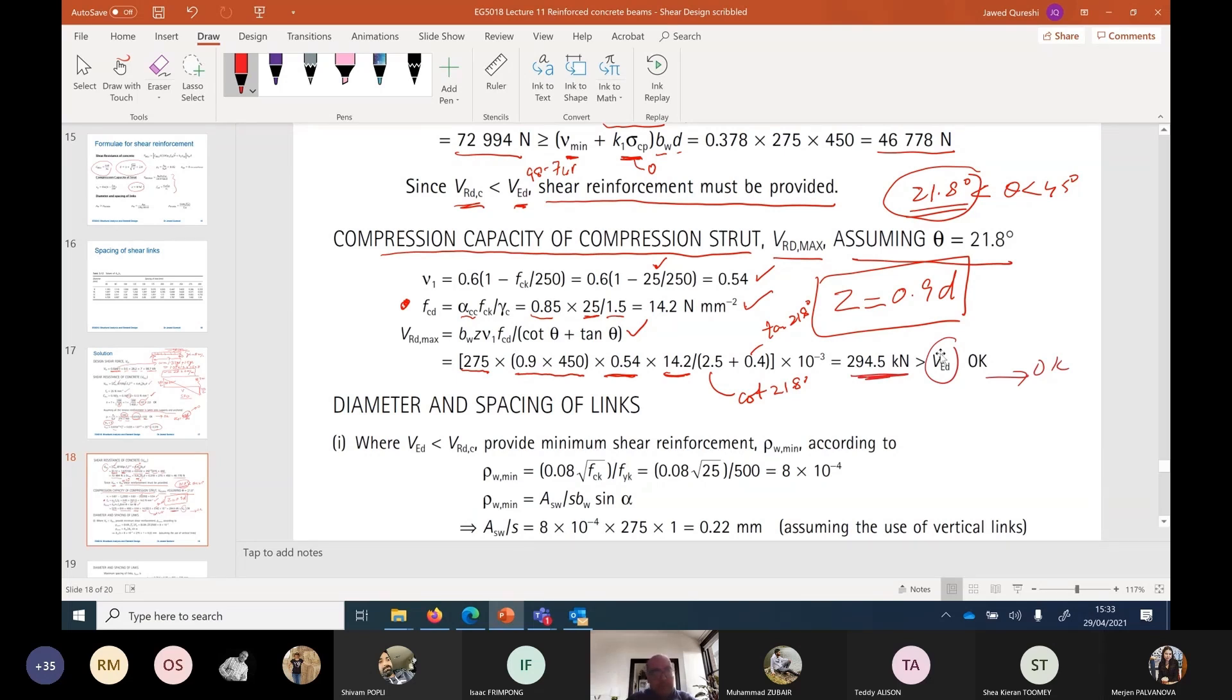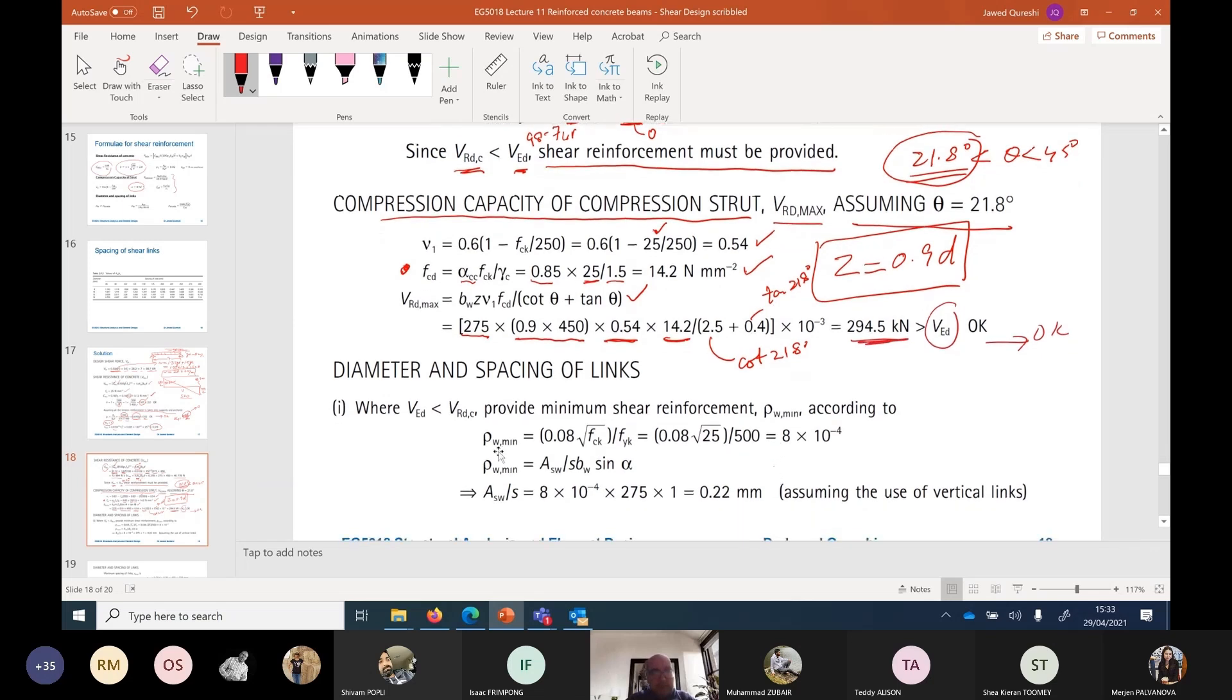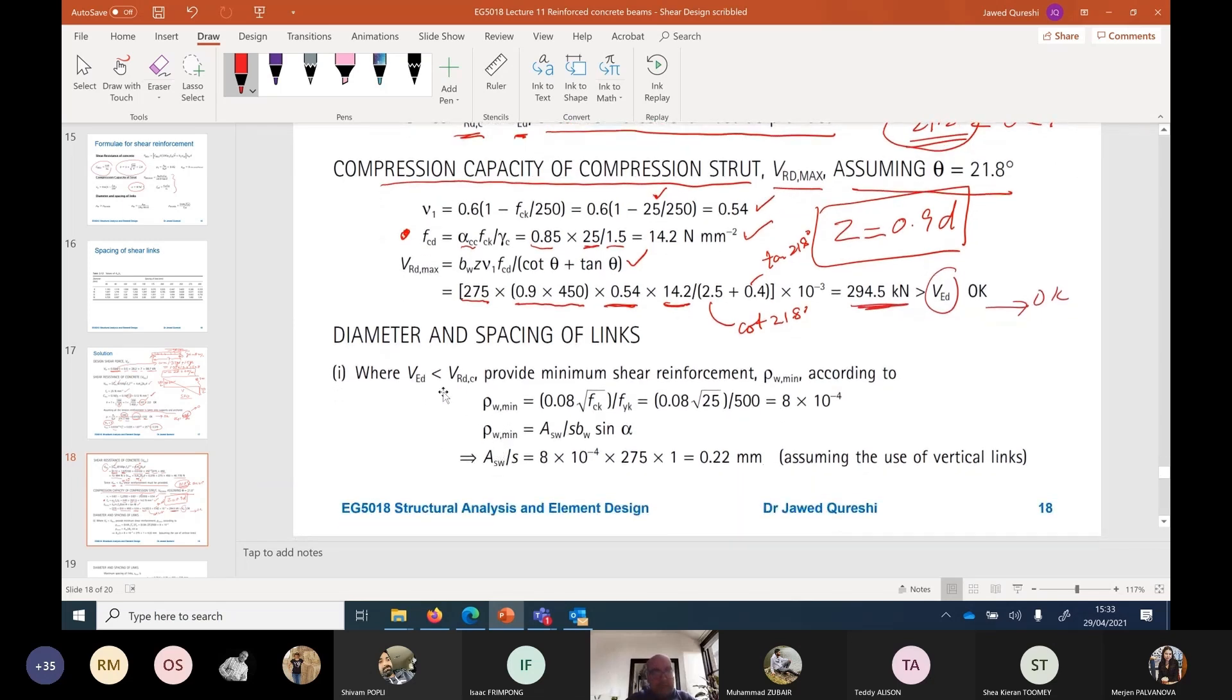Now, we have to find the diameter and spacing of links. Where VED is less than VRDC, we have to provide minimum. In our case, VED is greater than VRDC. So, we don't have to worry about this. But you might want to find VED over here, which might be less than VRDC. Then you're providing kind of minimum reinforcement into this middle region. Middle L over 4 region. So, this is from that perspective. The actual links, it would be on the next slide.